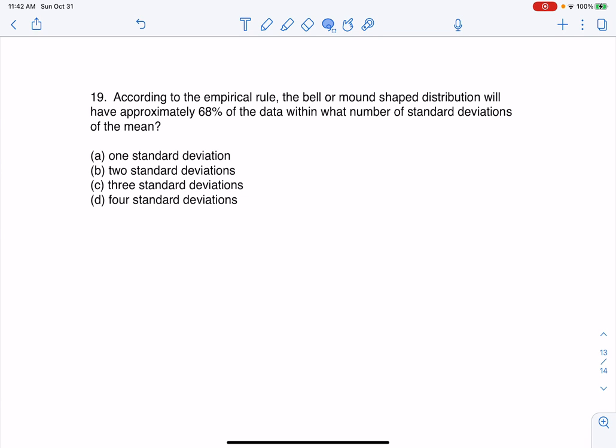Hey everyone, last sample exam question. According to the empirical rule, the bell or mound-shaped distribution will have approximately 68% of the data within what number of standard deviations?